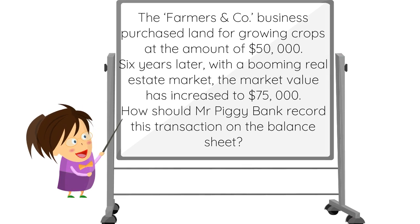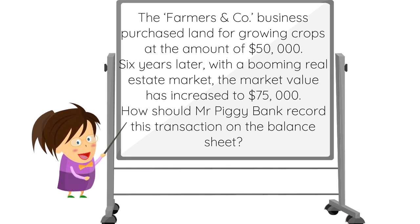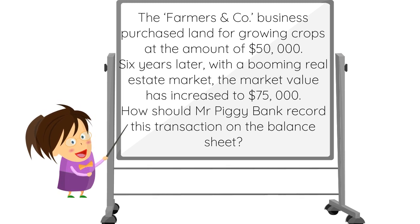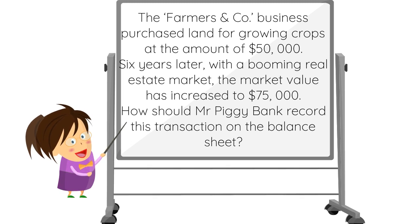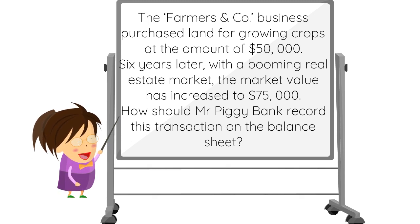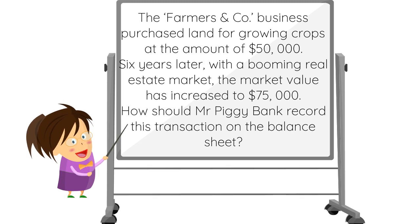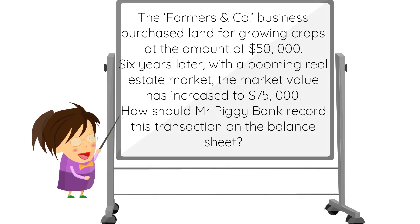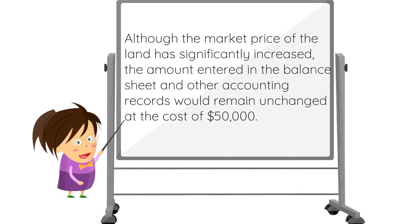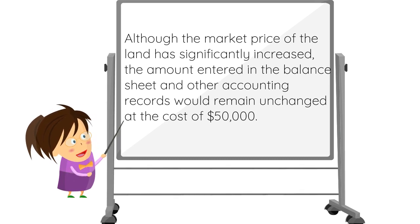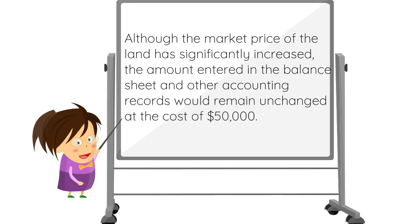Let's help Mr. Piggy Bank with his first task. The Farmers and Co. business purchased land for growing crops at the amount of $50,000. Six years later, with a booming real estate market, the market value has increased to $75,000. So how should Mr. Piggy Bank record this transaction on the balance sheet? Although the market price of the land has significantly increased, the amount recorded on the balance sheet and other accounting records would remain unchanged at the cost of $50,000.